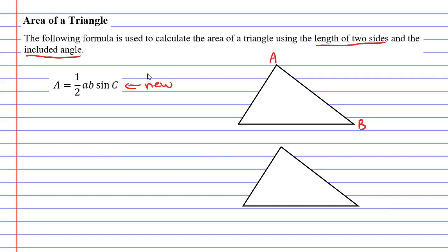Now these capital letters, capital A, B, and C, also represent angles. So this is capital A or the angle at capital A, this is the angle at capital B, and the angle at capital C.